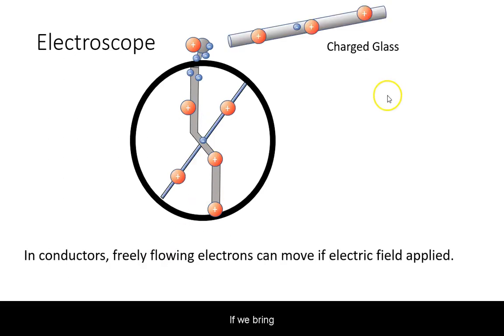If we bring the previously positively charged glass rod near the bob, then even without touching it, it is going to start attracting the electrons from the apparatus. Because now the core and the loose rod are both positively charged, they will start repelling each other, resulting in the deflection.